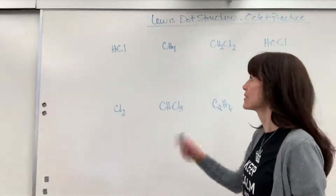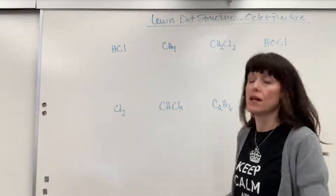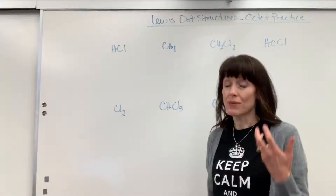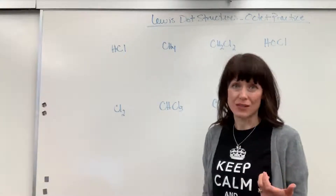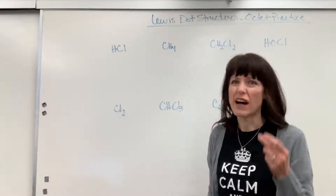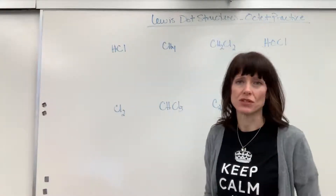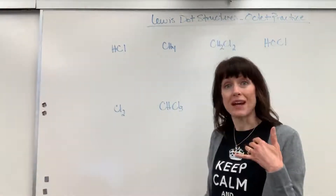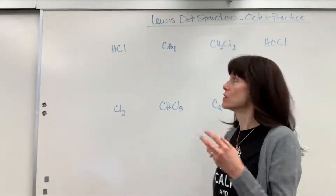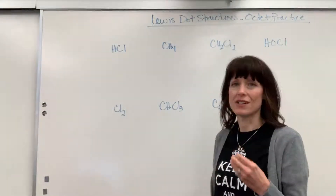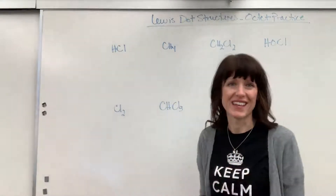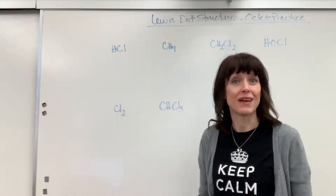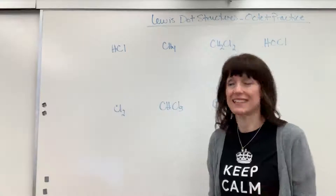Let's start with HCl. As you begin, I would recommend doing the electron dot. You'll get fast and be able to do this in your head, but I'm going to be pretty systematic in showing you the electron dot and then how those electrons come together to make an octet.